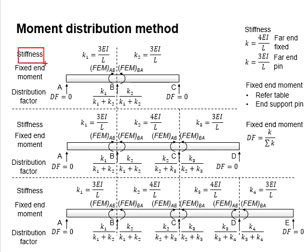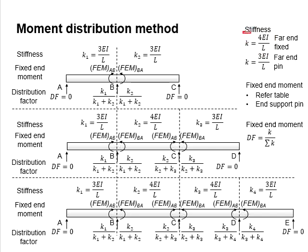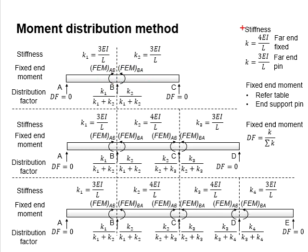Stiffness refers to the section property of the continuous member. It is defined by the modulus of elasticity, the second moment of inertia, and the effective length of the members. Support conditions also affect stiffness. For a continuous member, the end supports are normally assumed to be pinned, and the continuous part is considered as fixed.